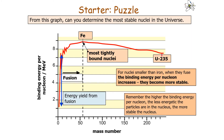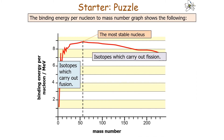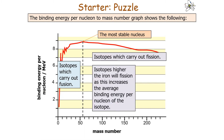For nuclei smaller than iron, when they fuse, the binding energy per nucleon increases and they become more stable, so we get an energy yield from fusion. For nuclei larger than iron when they fission, the binding energy per nucleon increases and they become more stable. So isotopes below iron carry out nuclear fusion, and isotopes above iron carry out nuclear fission. Isotopes lower than iron will fuse because this increases the average binding energy per nucleon, and the same idea applies to isotopes higher than iron that fission.